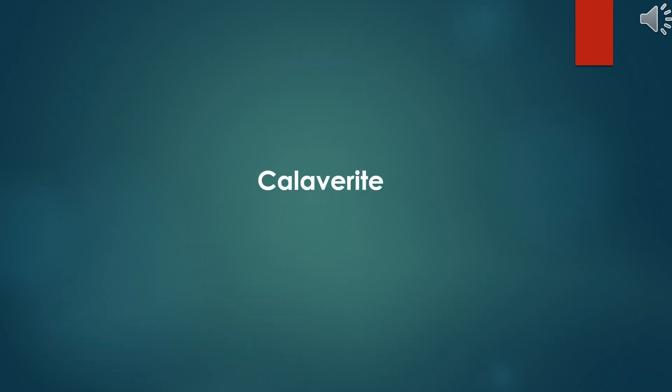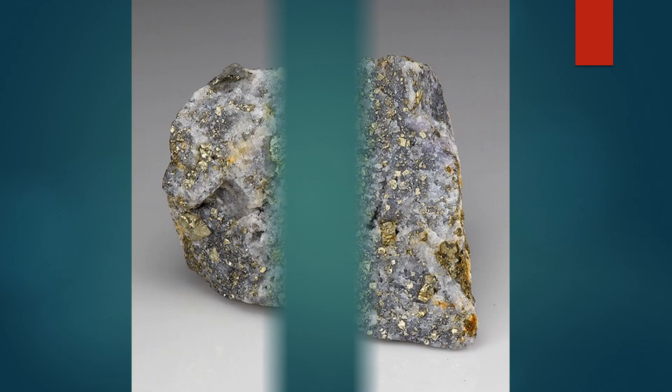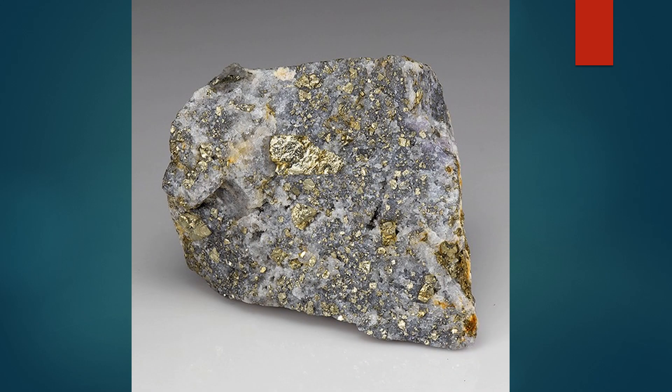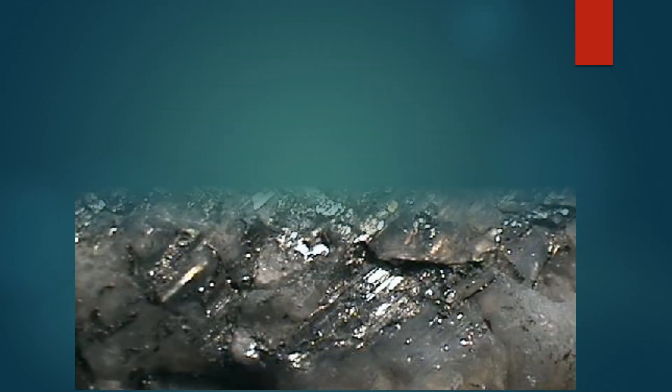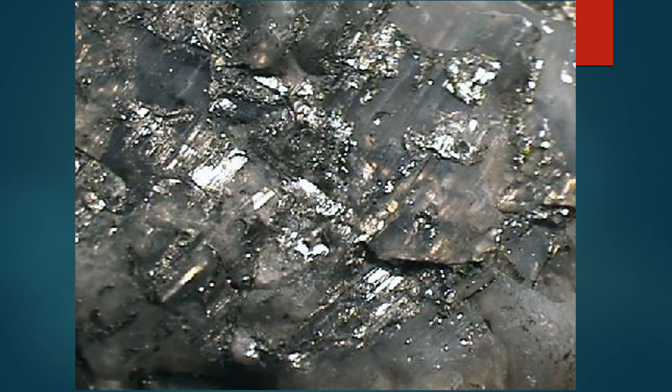Calaverite is a rare type of gold ore belonging to the telluride mineral group, with the chemical composition AuTe₂. It is a mineral where gold is bonded with tellurium, forming a fairly stable compound that is challenging to process during extraction.